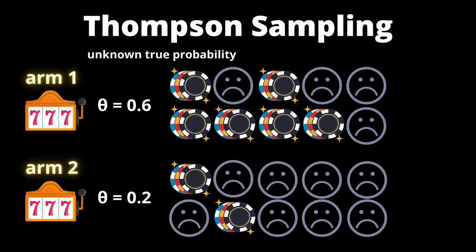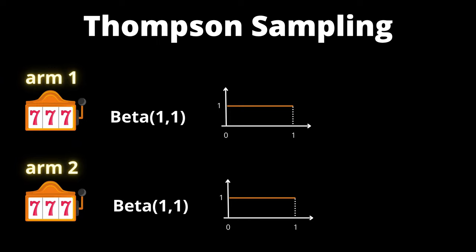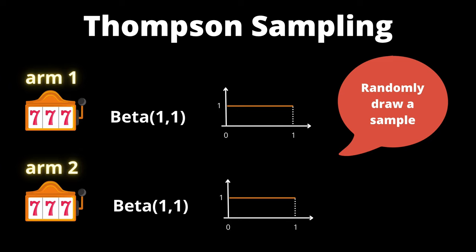At time step 1, let's assume that we do not have any prior information about the winning probability for each arm, and therefore let's just use beta 1 1, which is also the uniform distribution. Then let's randomly draw a sample from each distribution.